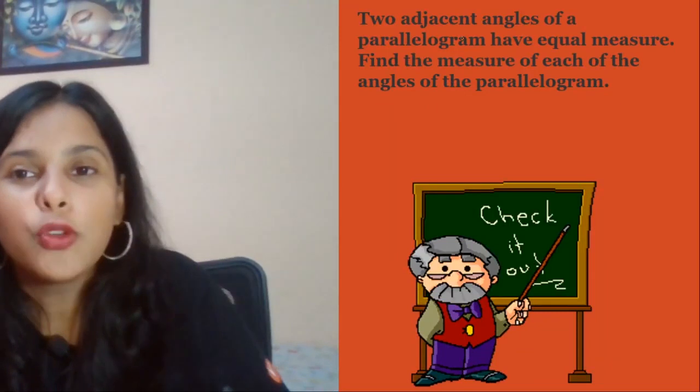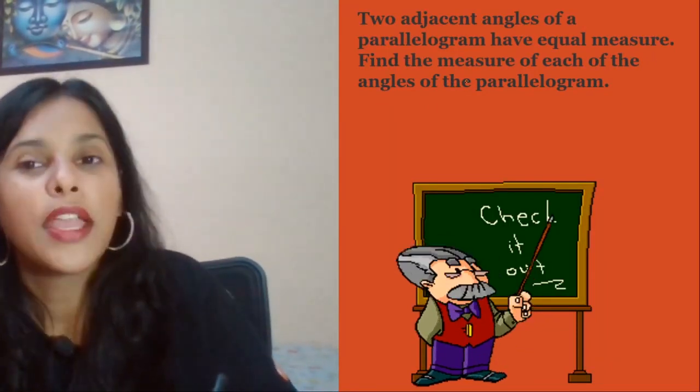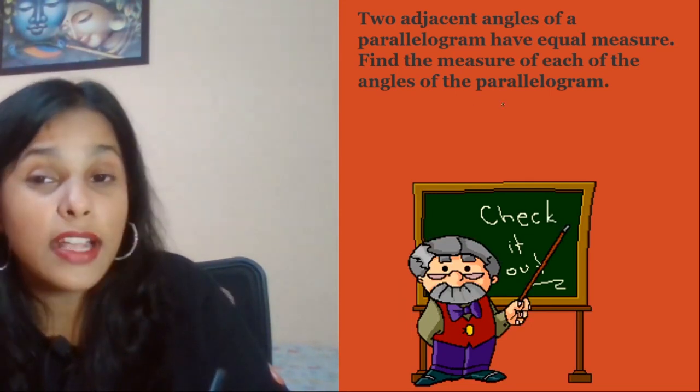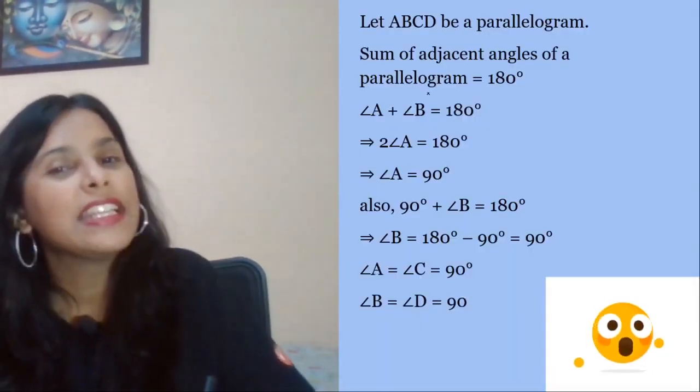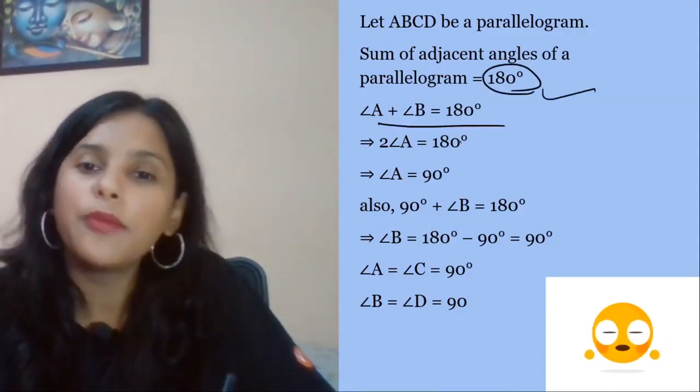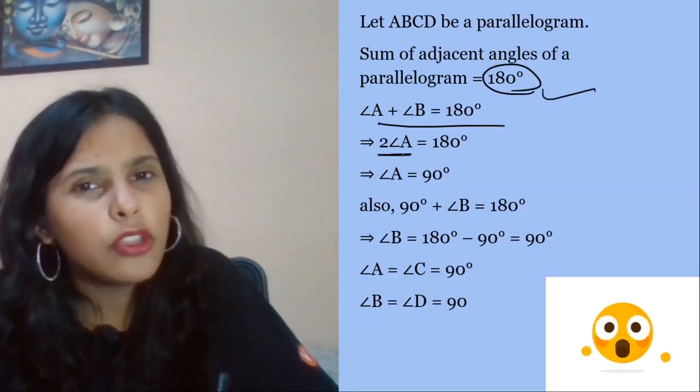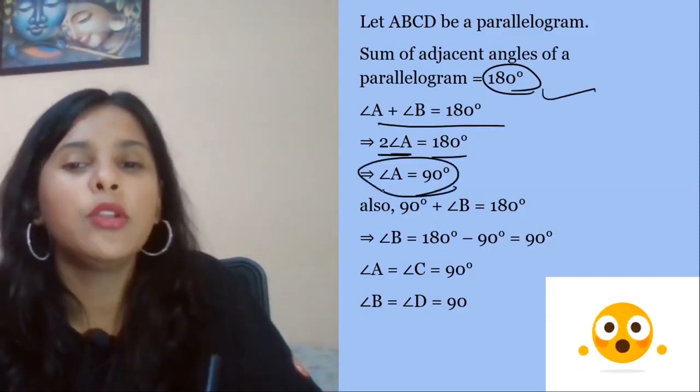Next question: Two adjacent angles of a parallelogram are equal. Find the measure of each angle. ABCD is the parallelogram. Adjacent angles sum to 180, so a plus b equals 180. Now we know both are equal, so 2a equals 180, so a value is 90.